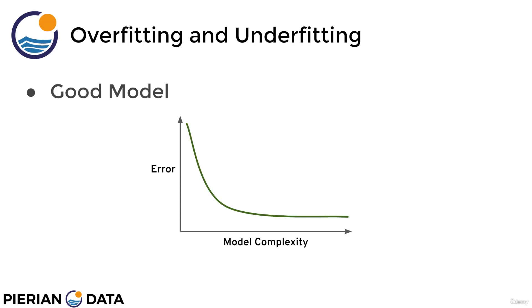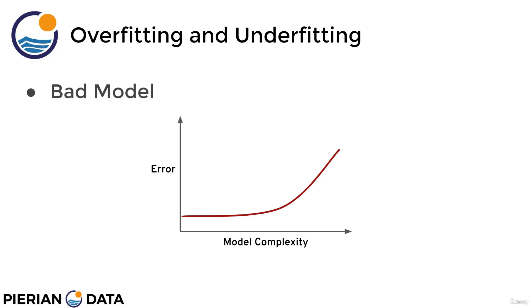Let's think about what a good performing model looks like. A really good model would, as you increase model complexity, have a lower error. This is the ideal situation — it's going to be unlikely to be this perfect in the real world, but as you increase the complexity, your error goes lower. For the polynomial regression case, that would be your polynomial degree: as you increase the degree of your polynomial, your error is going to go down in general. A bad model would actually have an increase in error as you increase the complexity of the model.